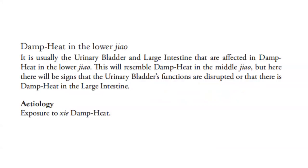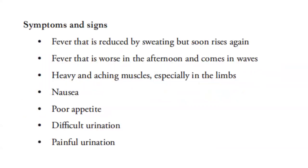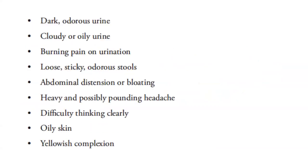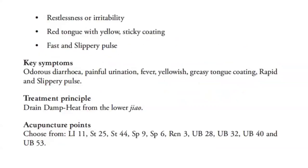Etiology: exposure to external damp heat. Symptoms and signs include: fever that is reduced by sweating but soon rises again, fever that is worse in the afternoon and comes in waves, heavy and aching muscles especially in the limbs, nausea, poor appetite, difficult urination, painful urination, dark odorous urine, cloudy or oily urine, burning pain on urination, loose sticky odorous stools, abdominal distension or bloating, heavy and possibly pounding headache, difficulty thinking clearly, oily skin, yellowish complexion, restlessness or irritability. The tongue is red with yellow sticky coating, and the pulse is fast and slippery.